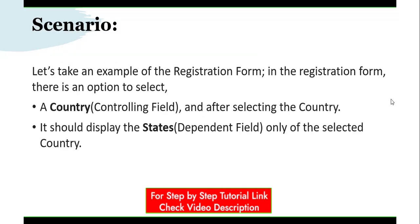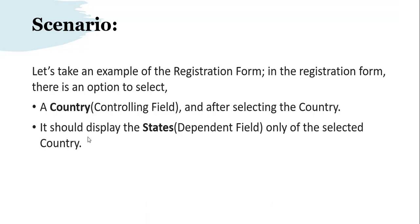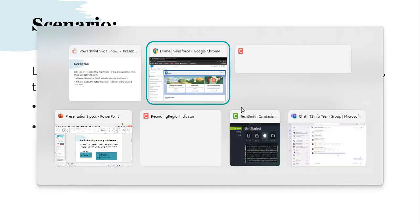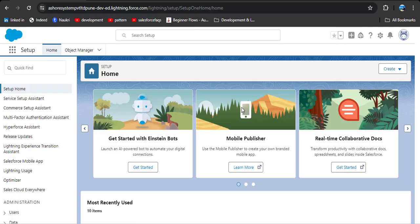To better understand, let's take a scenario — here is the example of a patient registration form. In the registration form there are two options: country, which is the controlling field, and after selecting the country, the other field should display only those states which are in the selected country. Without any delay, let's jump to the org where I will demonstrate how to create field dependency.